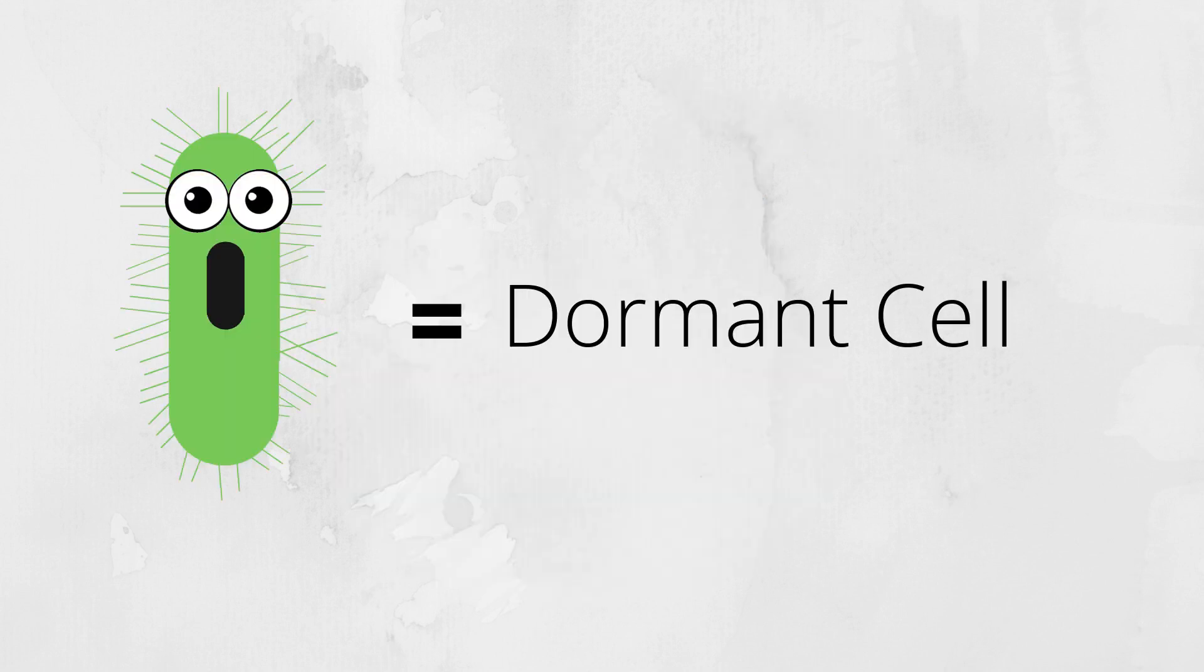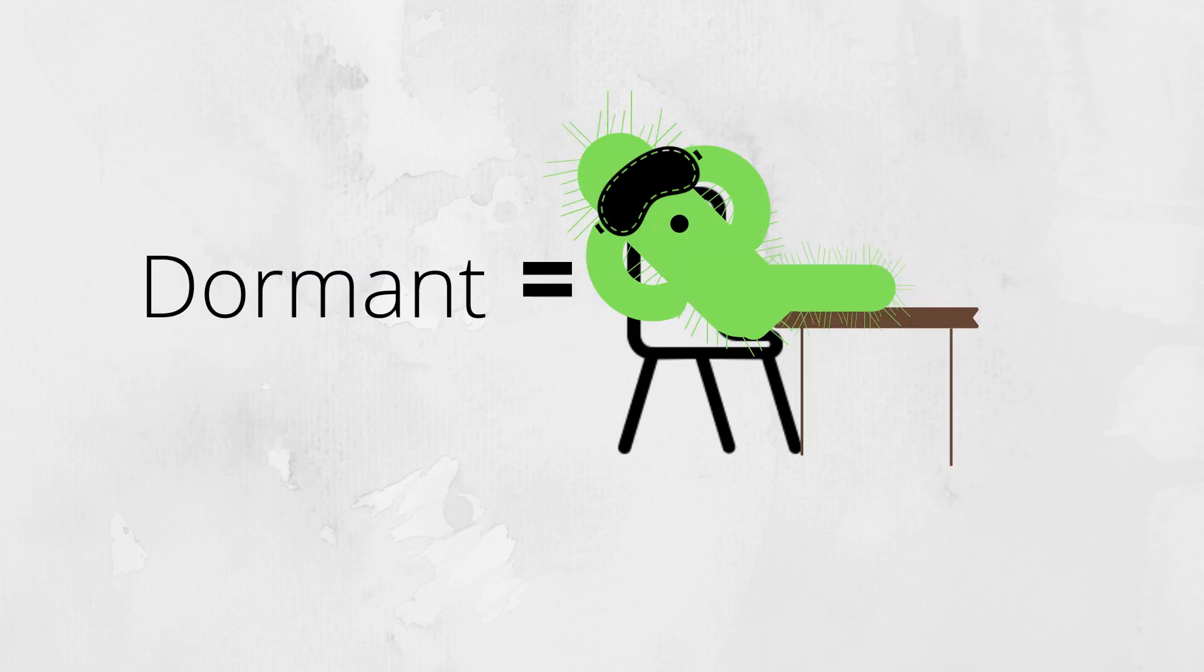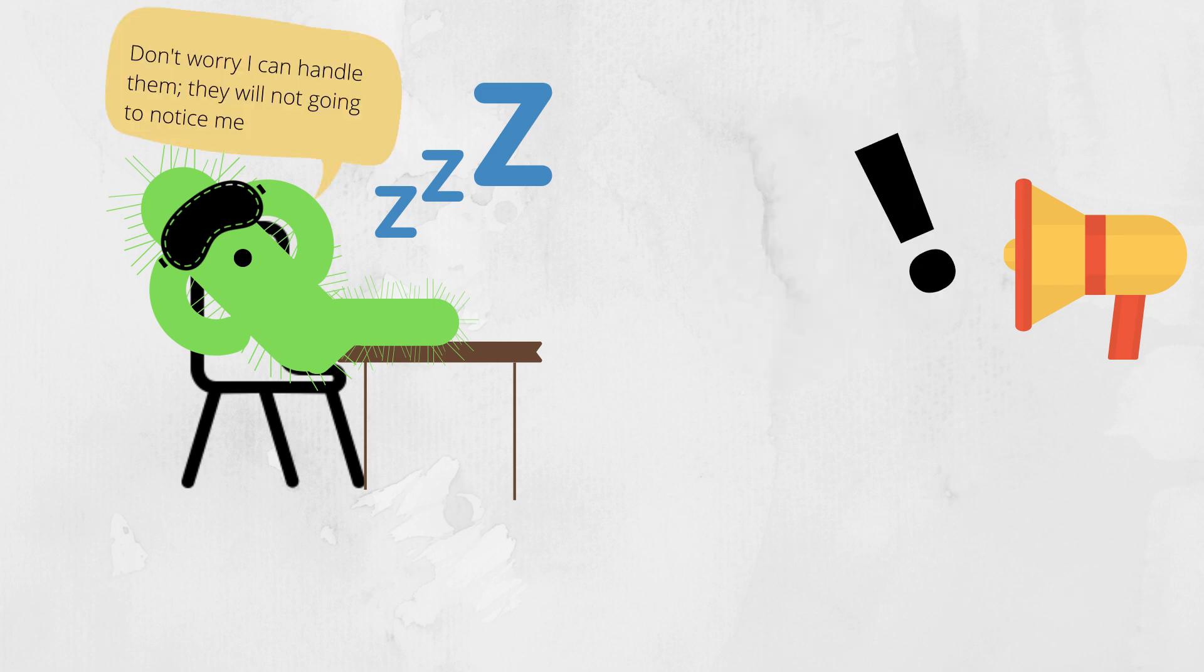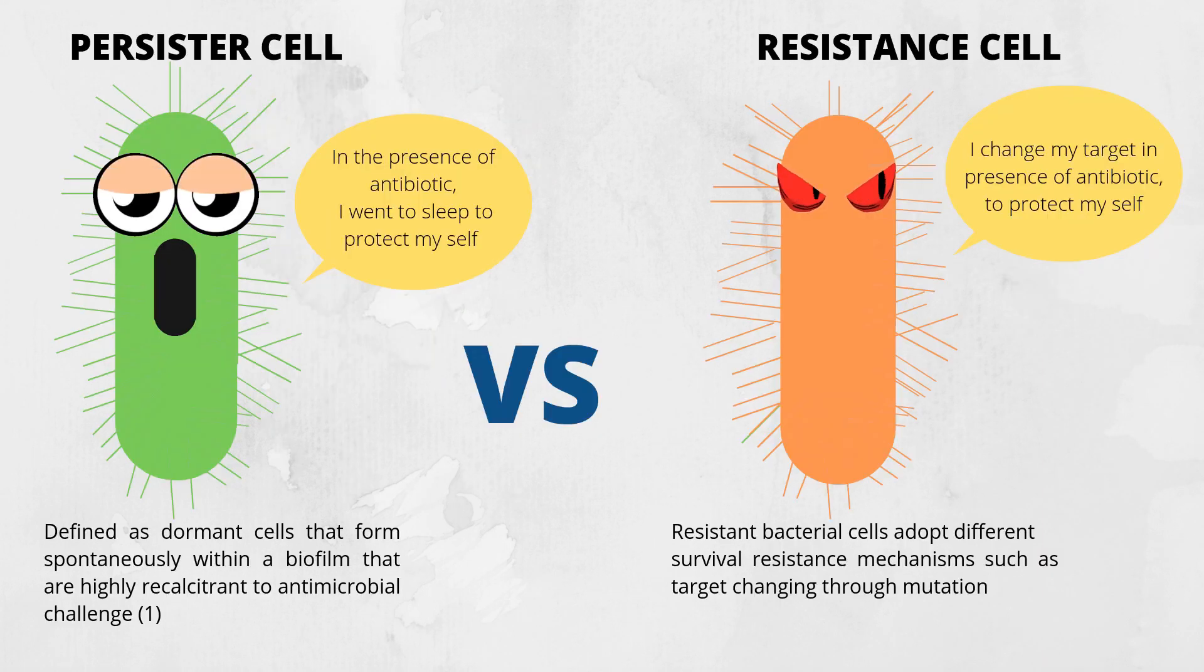Well, persister cells are defined as dormant cells, and dormant means inactive, no cell function, that form spontaneously within a biofilm and are highly tolerant to antibiotics. In other words, those cells tend to sleep in the presence of antibiotics without any genetic changes, while resistant cells will adopt different survival-resistant mechanisms, such as target changing through mutation.